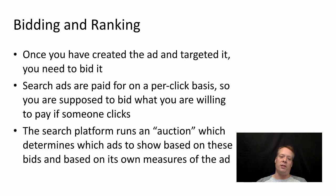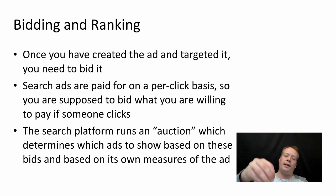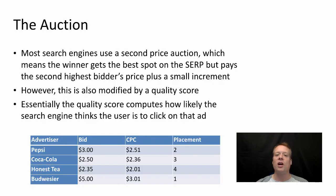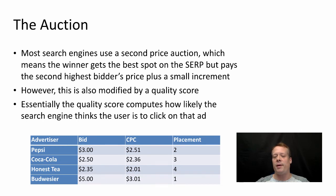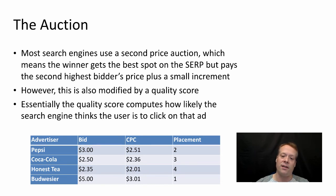Once you've created the ad and targeting, you need to bid. Search ads are paid for on a per-click basis, so you bid what you are willing to pay if someone clicks. The search platform then runs an auction based on those bids to determine which ads show up, based on both the bids and its own measures of the ads. Most search engines use a second price auction, which means the winner gets the best spot but pays the second highest bid price plus a small increment. This is also modified by a quality score. Essentially, the quality score computes how likely the search engine thinks the user is to click on an ad — the search engines are maximizing their expected value: the bid times the probability of actually clicking.